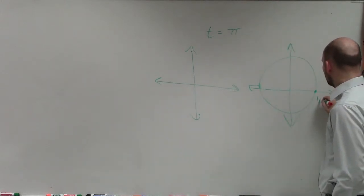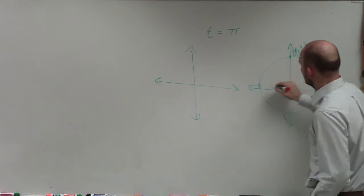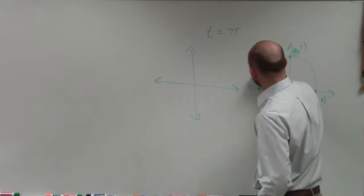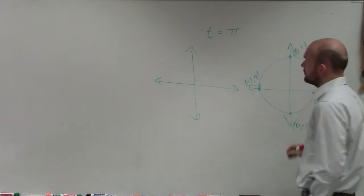Right? Here we have 1, 0. Here we have 0, 1. Here we have negative 1, 0. And here we have our common point, 0, negative 1.